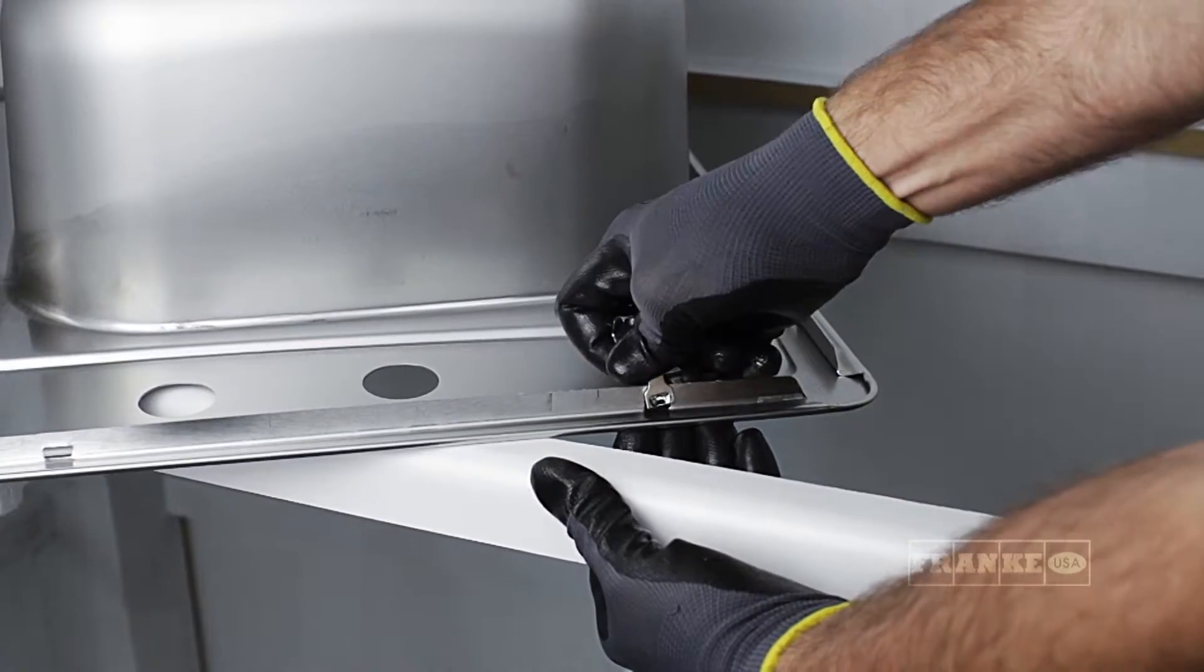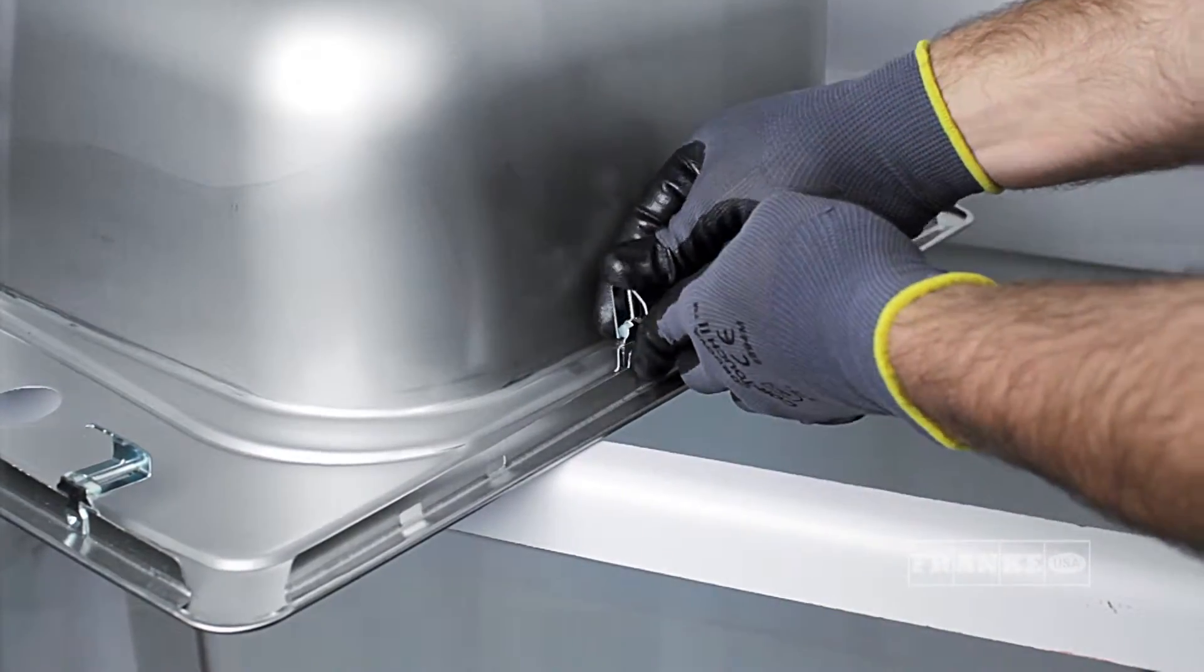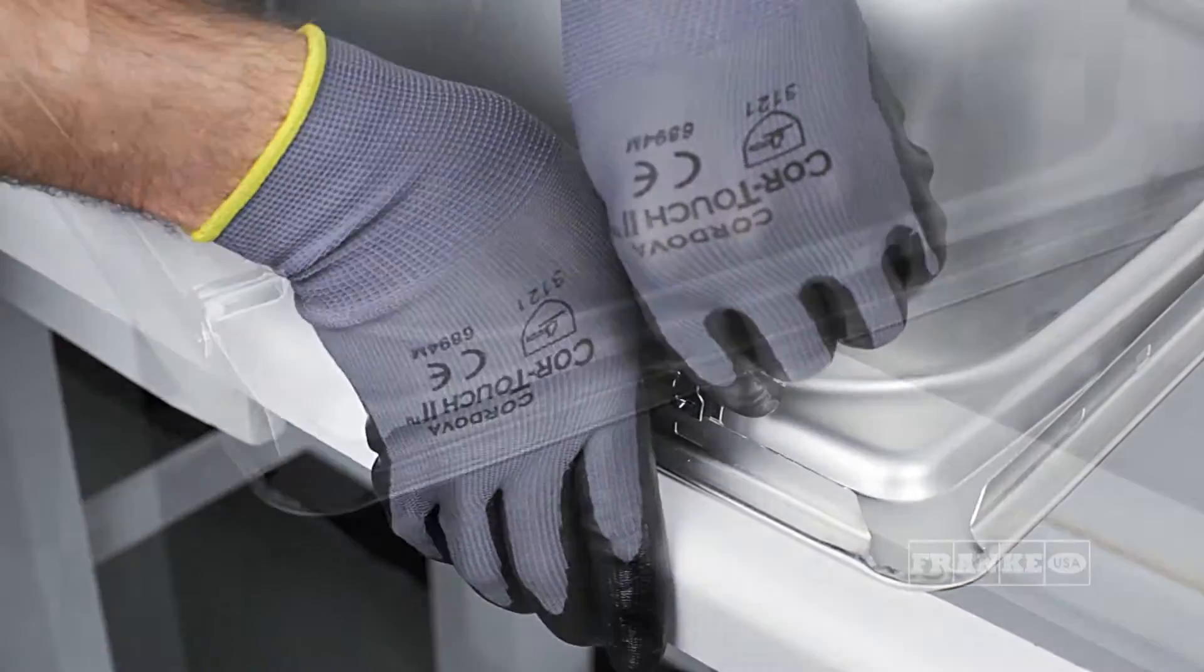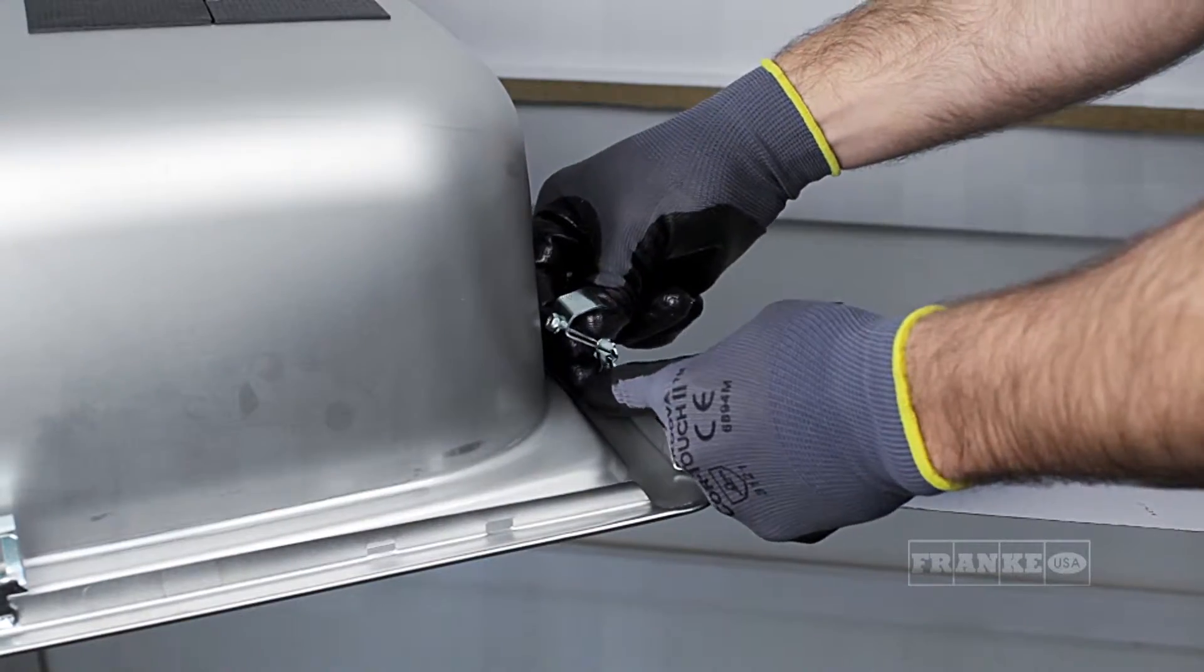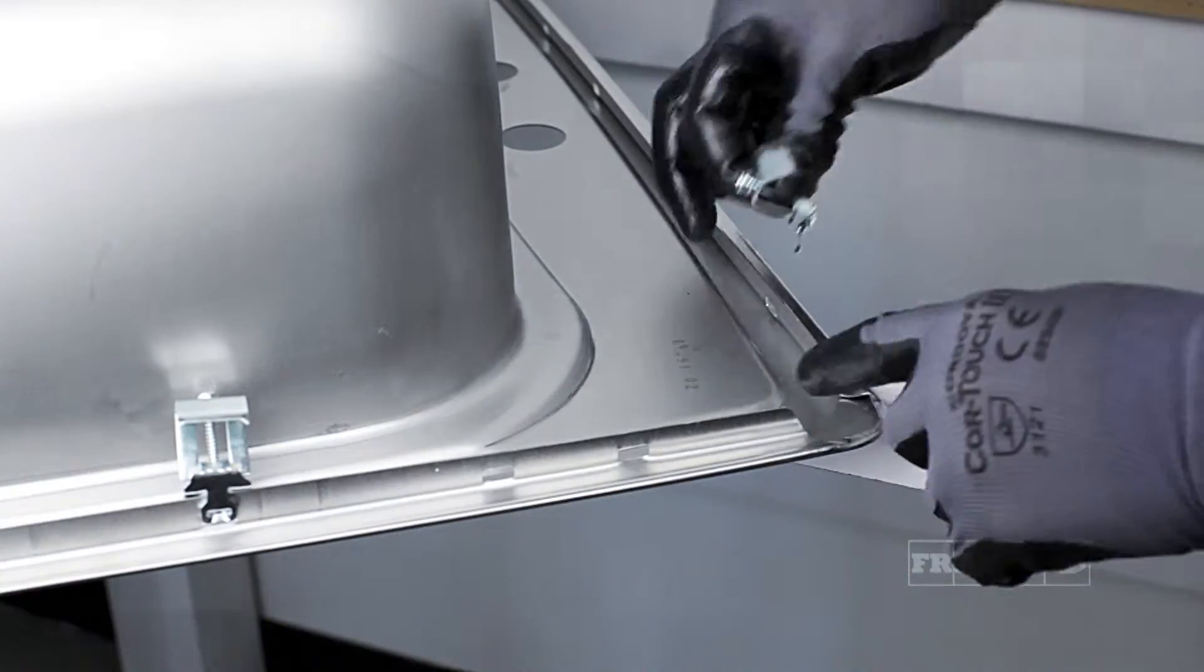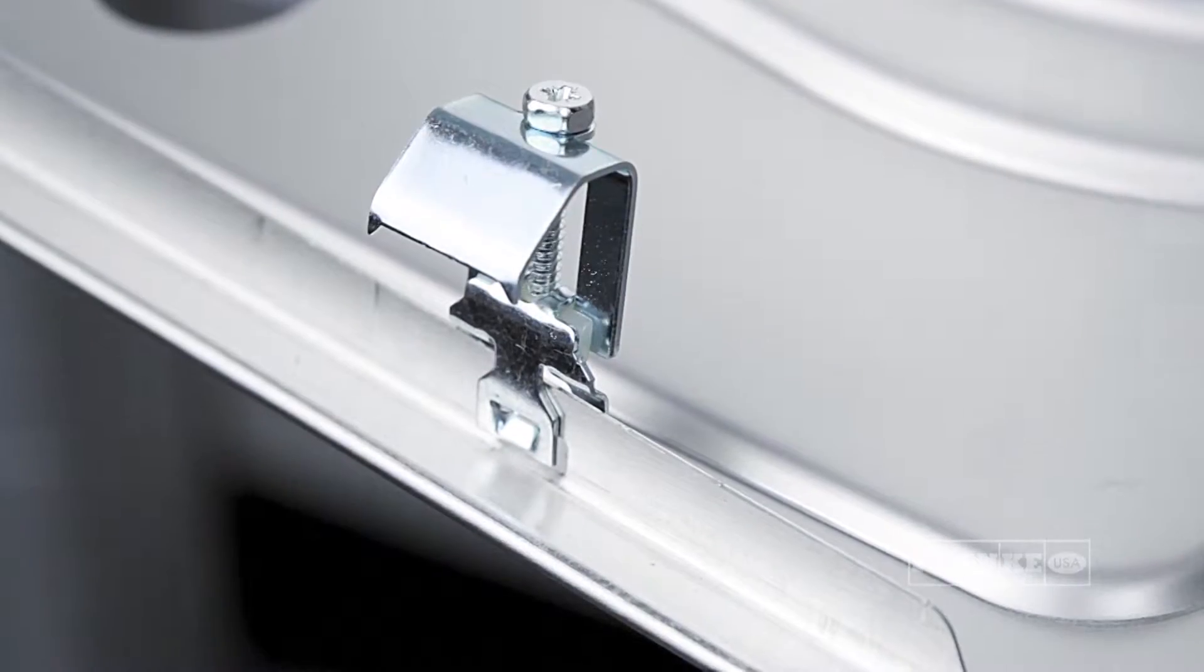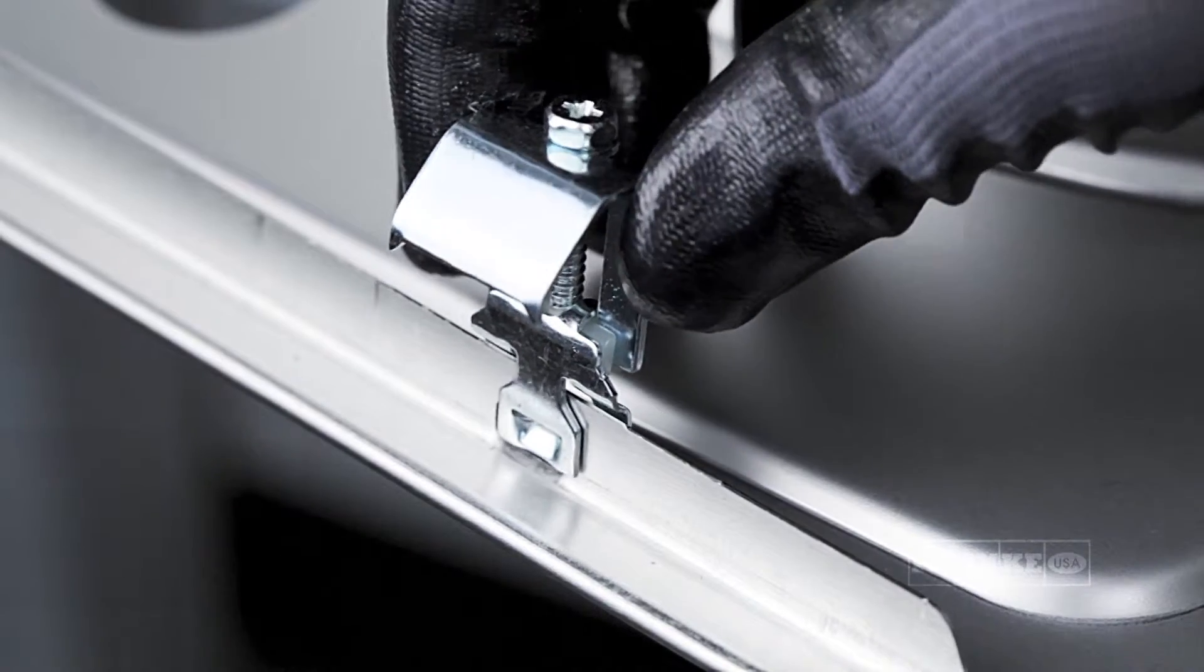It is recommended that you use a minimum of six clips for sink installation. Extra clips are included if your sink model requires additional clips. Ensure the clip jaws are facing the outside edge of the sink and verify clip snaps are fully seated into the mounting slot.